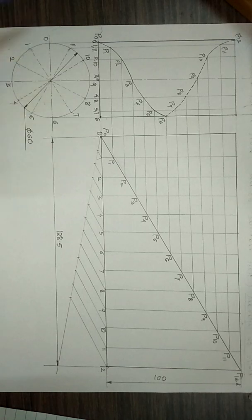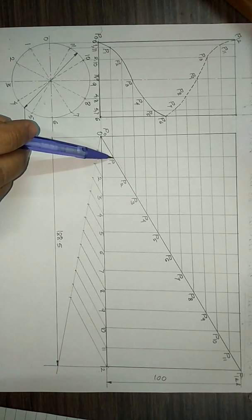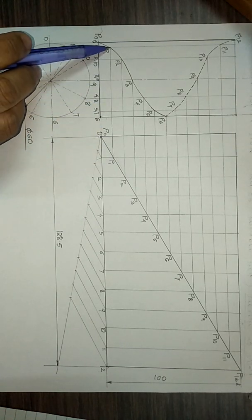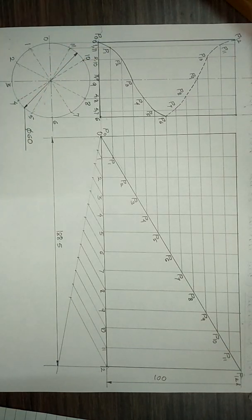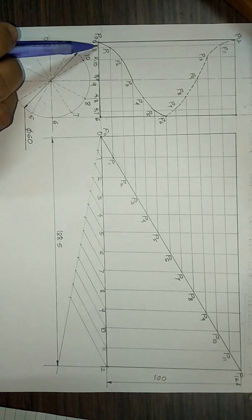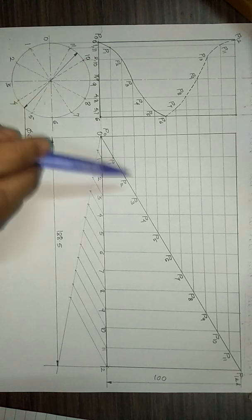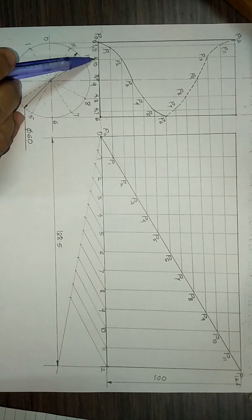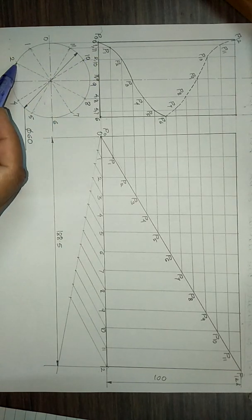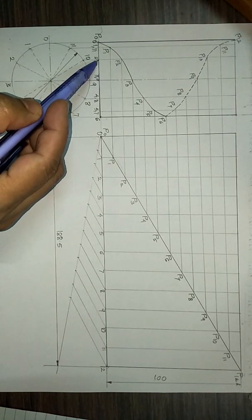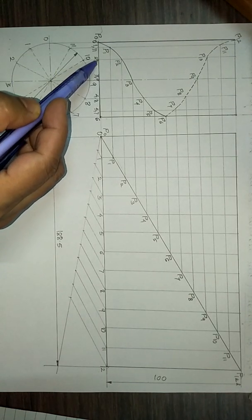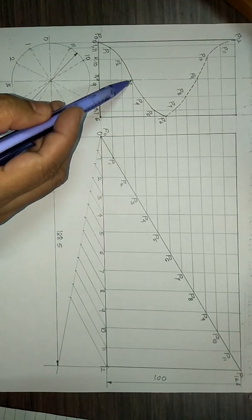These points on the diagonal are transferred to the front view. Point p1 is transferred to the line for 1 and 11, in the first part of the circle. P2 is transferred on the line for 2 and 10, the second part of the circle projected on the front view. Then p3.